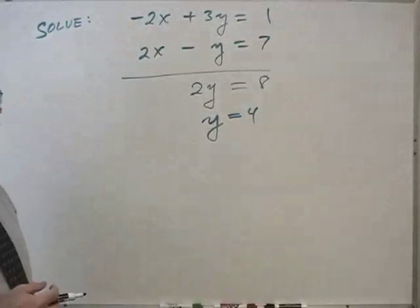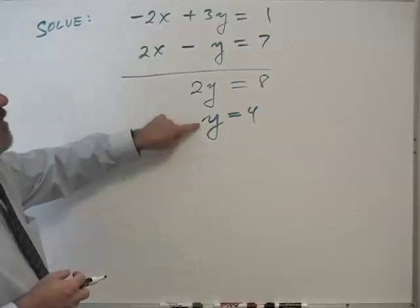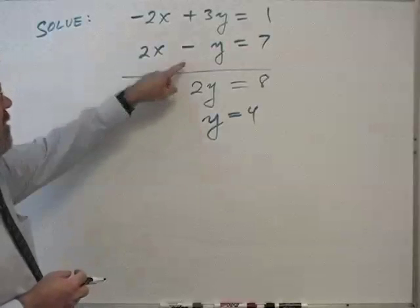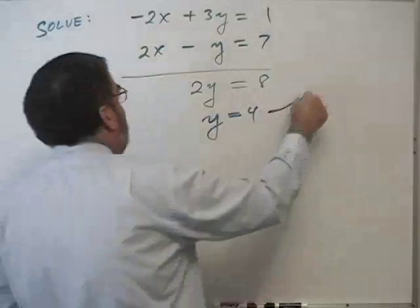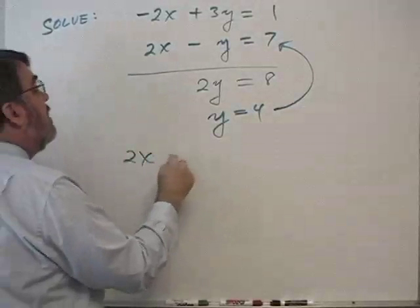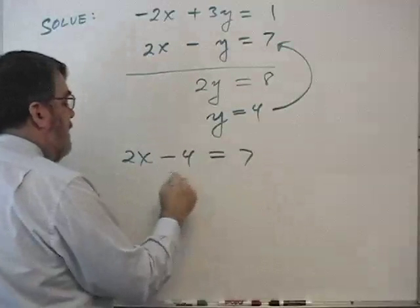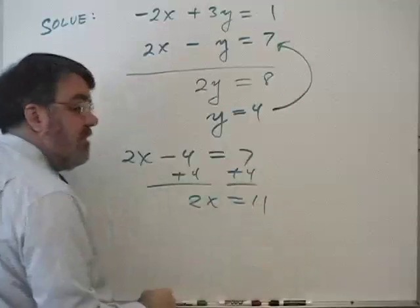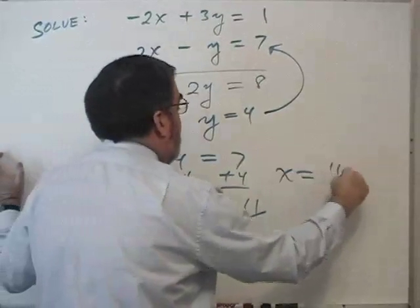Now what this implies is that this y is a shared solution with both of these. And so if I plug the value for y into either of these equations, let's suppose we went to the second equation. Then we would have 2x minus 4 equals 7. Add 4 to both sides. 2x equals 11. And now divide by 2, and we see that x equals 11 halves.